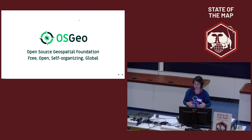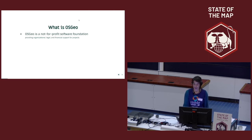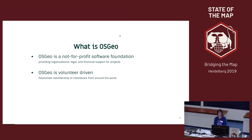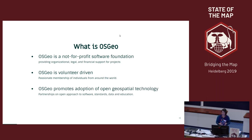We have so many acronyms and maybe not everyone knows what it means. It's the OpenSource Geospatial Foundation and it stands for Free, Open, Self-Organizing and Global Community. It's a non-profit software organization providing organizational, legal and financial support for projects. OSGEO is volunteer driven, so we don't have staff, we don't have employees — everything is done by the community. We have passionate members all over the world and OSGEO promotes adoption of open geospatial technology, with an open approach to software, standards, data and education.